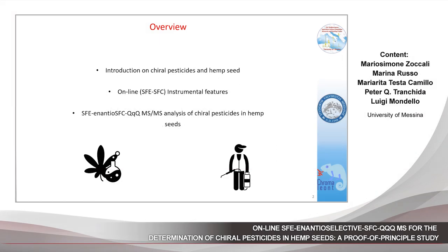The present research can be considered as a proof-of-principle study focused on the determination of chiral pesticides using supercritical fluid extraction instruments coupled online with an enantioselective supercritical fluid chromatography triple-quad mass spectrometry, namely the Nexera UC instrument. To the best of the present authors' knowledge, this is the first description of an online approach for the simultaneous extraction and determination of chiral pesticides.